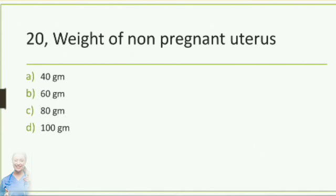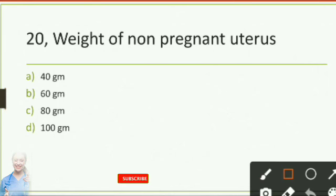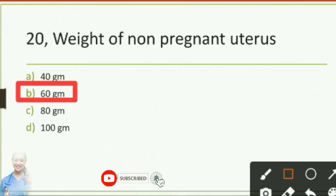Question number 22: Weight of non-pregnant uterus — option A 40 grams, option B 60 grams, option C 80 grams, option D 100 grams. The answer is 60 grams.